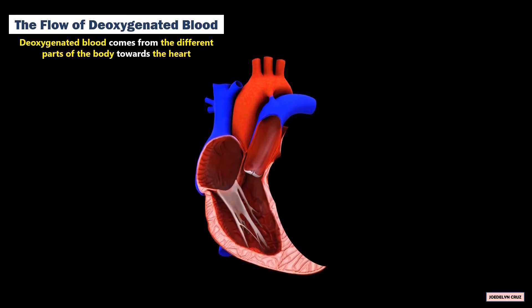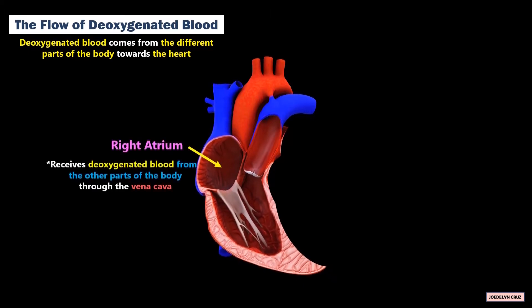The right atrium receives the oxygenated blood from the other parts of the body to the vena cava.